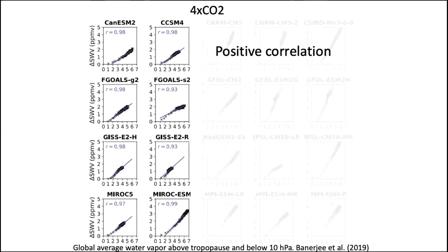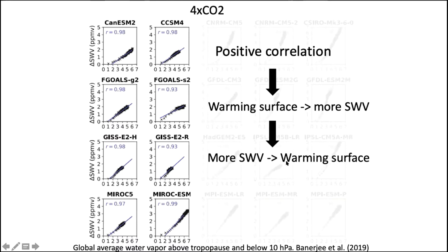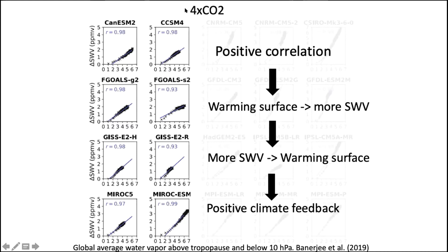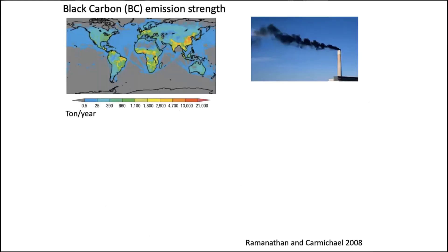This positive correlation is important since it tells us that when the surface warms, we get more stratospheric water vapor. Since it's a greenhouse gas, this means a warming surface leads to more warming — that's a positive climate feedback, which amplifies the climate forcing. However, this is only established when we increase CO₂. We don't know how stratospheric water vapor responds when the climate is perturbed by forcing agents with different physical properties.